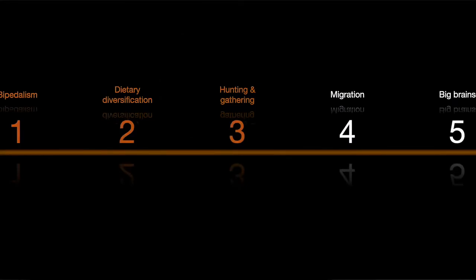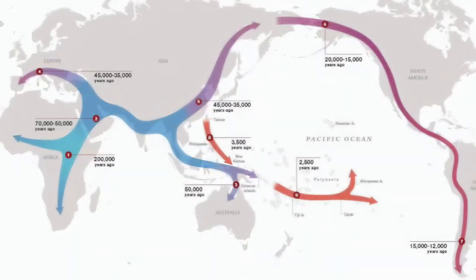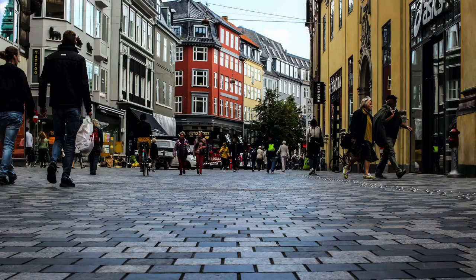These first three adaptations — bipedalism, dietary diversification, and then hunting and gathering — predicated our spread across much of the old world and our propensity for developing bigger brains and larger, more slowly growing bodies. These transitions allowed for modern Homo sapiens' special capacities for language, culture and cooperation. Essentially, they unlocked everything we consider characteristic of modern civilisation.